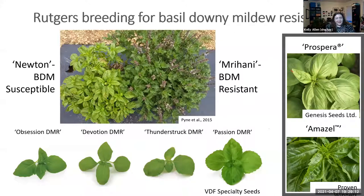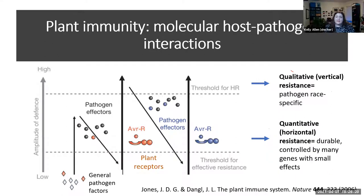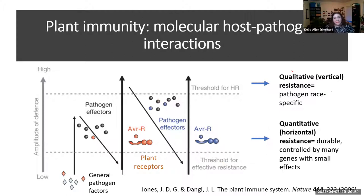Just to recap: we have qualitative resistance — single, race-specific, single gene — and then quantitative or durable resistance. Looking back at this diagram, we can see that even though durable resistance is controlled by many genes, it still involves plant receptor-type proteins, these resistance genes. Further identifying these plant genes and then identifying the pathogen effectors interacting with them will allow us to discover the mechanisms the pathogen uses to overcome resistance and identify new sources of resistance, which is really exciting.